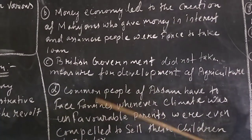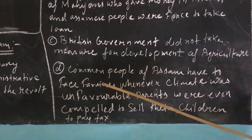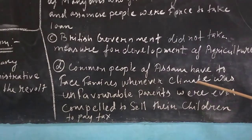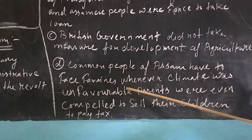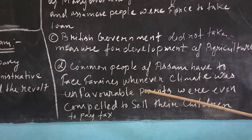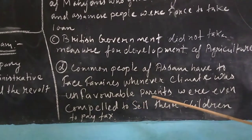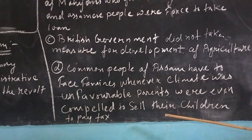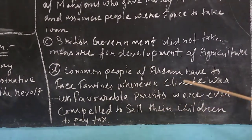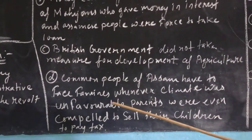The fourth reason: the common people of Assam had to face famine. Whenever the climate was unfavorable — sometimes drought, sometimes flood in Assam — they had to pay tax regardless. When they were not able to pay tax, parents were even compelled to sell their own children to pay tax. Such a pathetic condition existed among the people of Assam under British rule, making this another reason for the anti-British uprising.